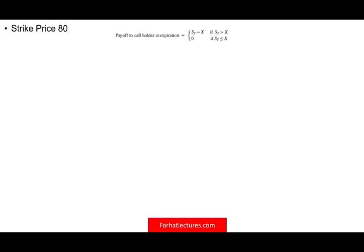In this session we're going to look at the profit and loss diagram for stock options. Let's take a look at an example with the call option. The strike price is $80 and the cost of this option is $14. So when does this option pay off for the buyer? Well, obviously it will pay off when you exceed $80. But let's take a look at the graph to see how this exactly works.